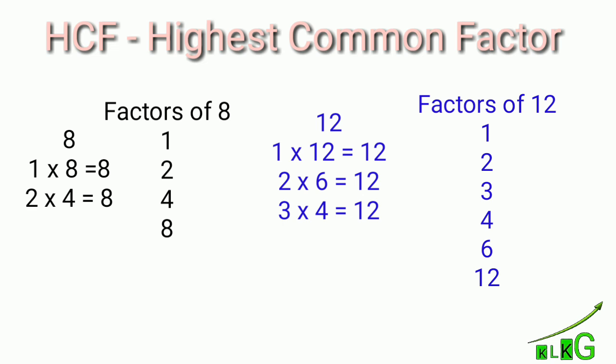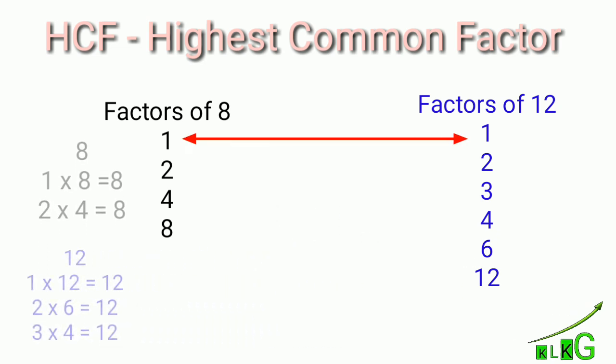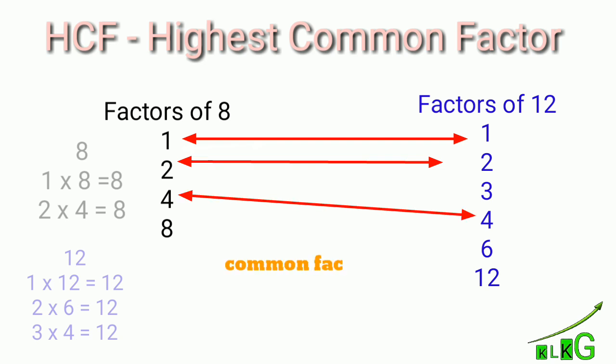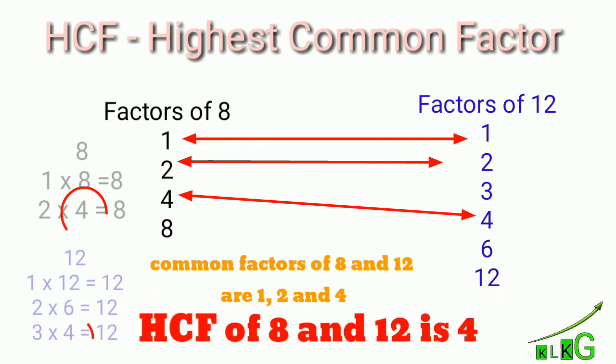If you understand what a factor is, then the Highest Common Factor is also very easy, because here you just have to compare the factors. The common factors of eight and twelve are: one is common, two is common, and four is common. So one, two, and four are the common factors, but the greatest common factor is four. So four is the Highest Common Factor of eight and twelve.